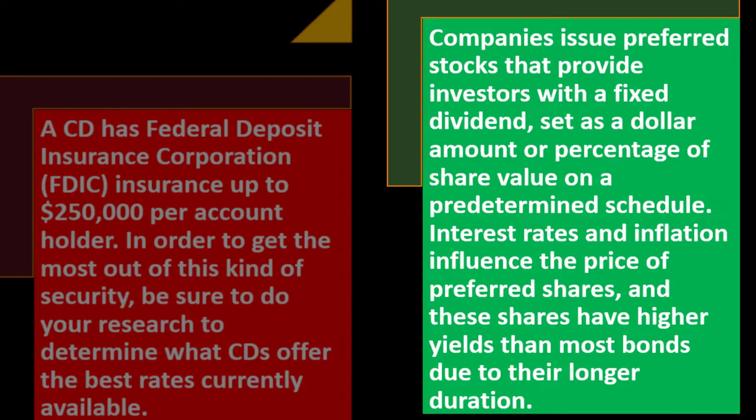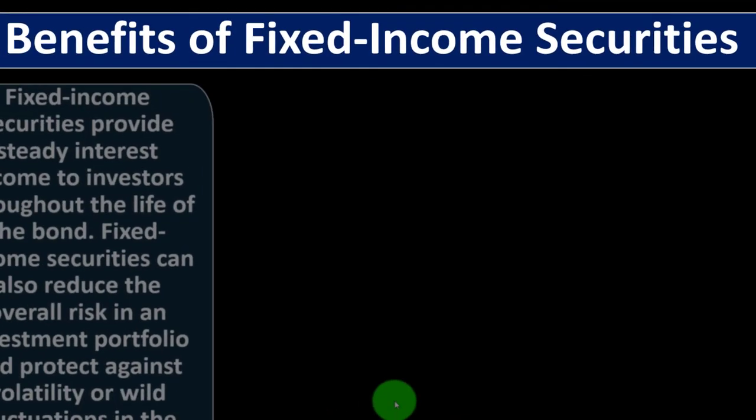Companies also issue preferred stocks that provide investors with a fixed dividend — set at a dollar amount or percentage of share value — on a predetermined schedule. Interest rates and inflation influence the price of preferred shares, and these shares have higher yields than most bonds due to their longer duration.